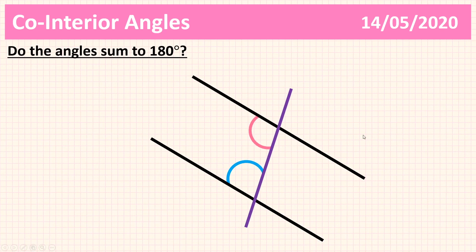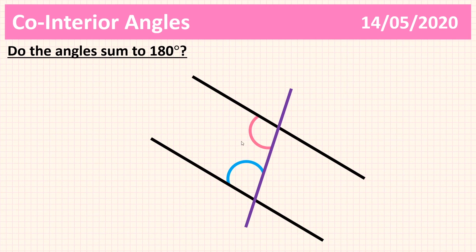What about this one? Well, the lines aren't parallel, so we cannot be sure that they sum to 180. Remember, the very first criteria for co-interior angles is they need to be on parallel lines. There aren't parallel lines here — they look parallel, but because we don't have the arrows to denote that they are parallel, we cannot say they are parallel. So even though the angles are on the same side of the transversal and they are interior to these lines, because the lines aren't parallel, we cannot say that these two angles sum to 180.